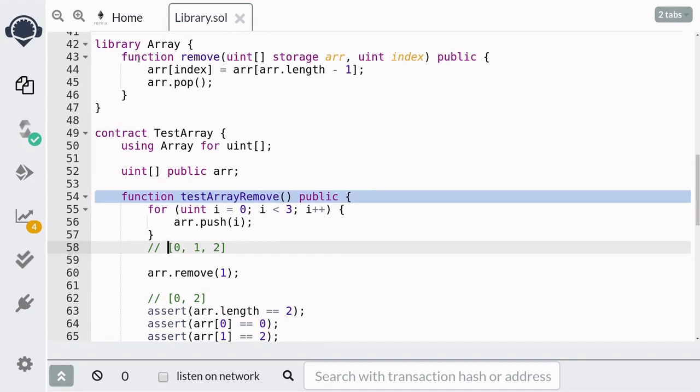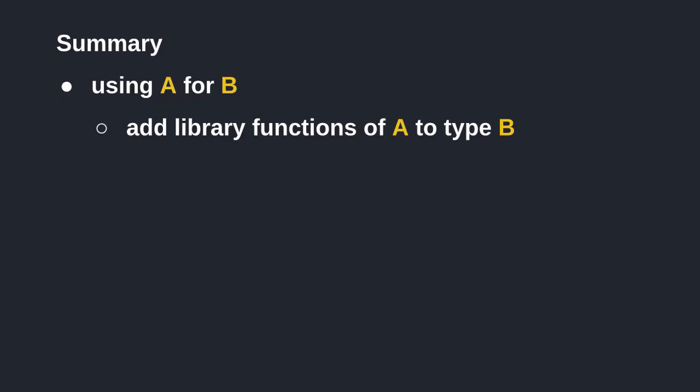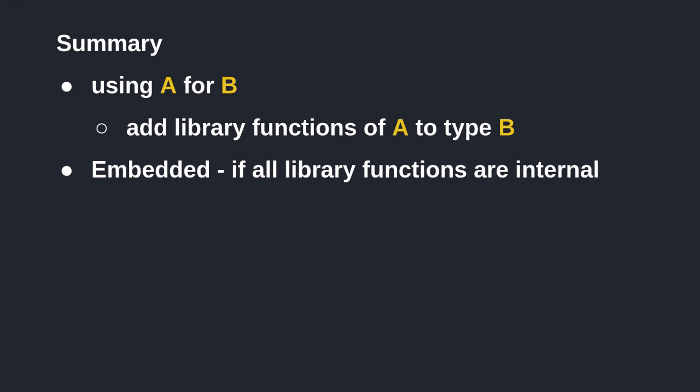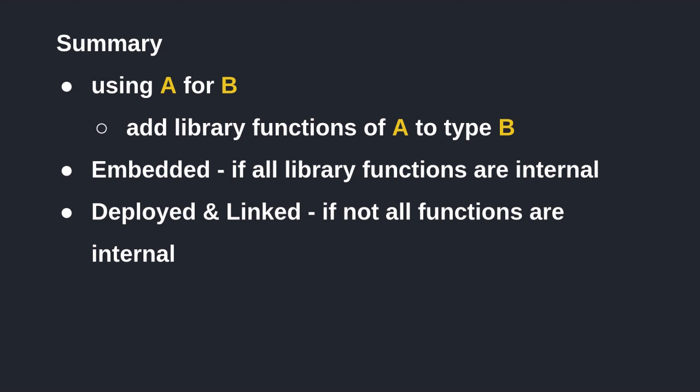In summary, using the `using A for B` syntax, you'll be able to add functions of library A to type B. The code of the library will be embedded into the contract if all of the library functions are internal, and this is done when you compile the contract. On the other hand, if some library functions are either public or external, then you'll have to deploy the library first, then link it with the contract before deploying the contract. By linking a contract to a library, you'll be able to save gas, but since this feature isn't available in Remix, I wasn't able to show a demo of this. Thanks for watching.